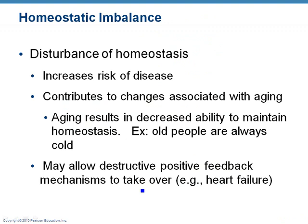Homeostatic imbalance is what we call disease — when something's gone wrong and you can no longer maintain homeostatic balance, that's when you're at risk. These tend to increase as you get older. For example, an elderly person who can no longer regulate body temperature, or someone in renal failure who can't maintain balance, or someone who's diabetic with high blood sugar because the pancreas isn't responding like it should. When homeostasis stops working, that usually leads to some sort of disease process.